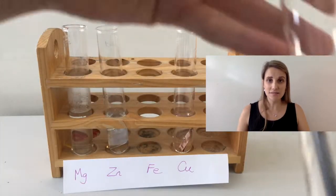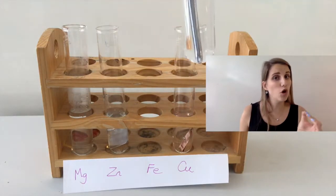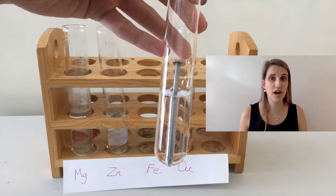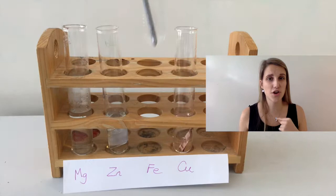The iron is the next most reactive and what you'll see is the iron has these small bubbles on the surface of the iron nail. Can you see them? They're really, really tiny, so just keep an eye out for those.